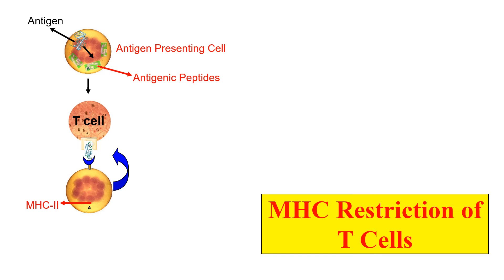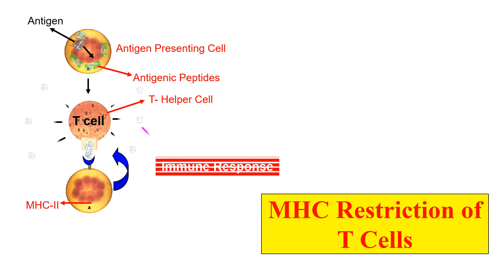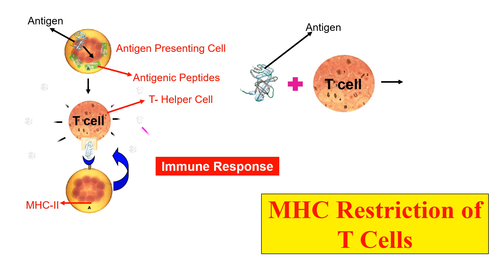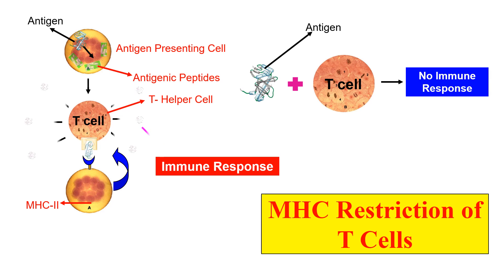This is MHC restriction — T-cells can only recognize the antigen when it comes along with the MHC molecule. After recognition, the T-cell, in this case a T-helper cell, starts releasing cytokines, which cause the immune response. But if an antigen comes alone, the T-cell is not able to recognize it, and there is no immune response. So this property of T-cells — that they can only act whenever the antigen comes along with MHC — is known as MHC restriction.